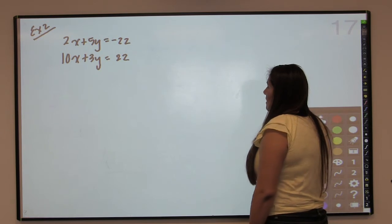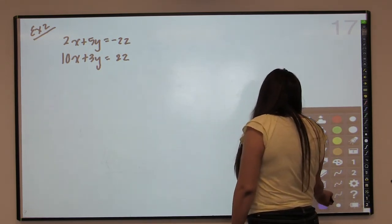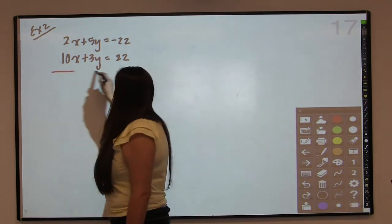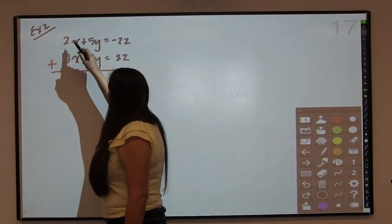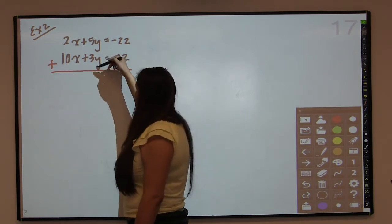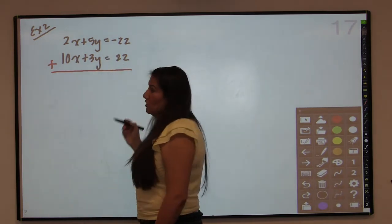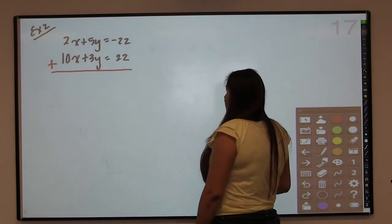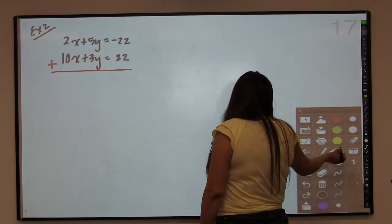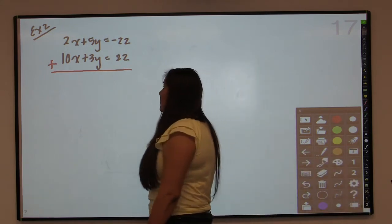Example 2. This is slightly more complicated in that when you add the two equations together, nothing's going to cancel. So in order for you to get it to cancel, you have to multiply one of the equations by something. So you have some options here.